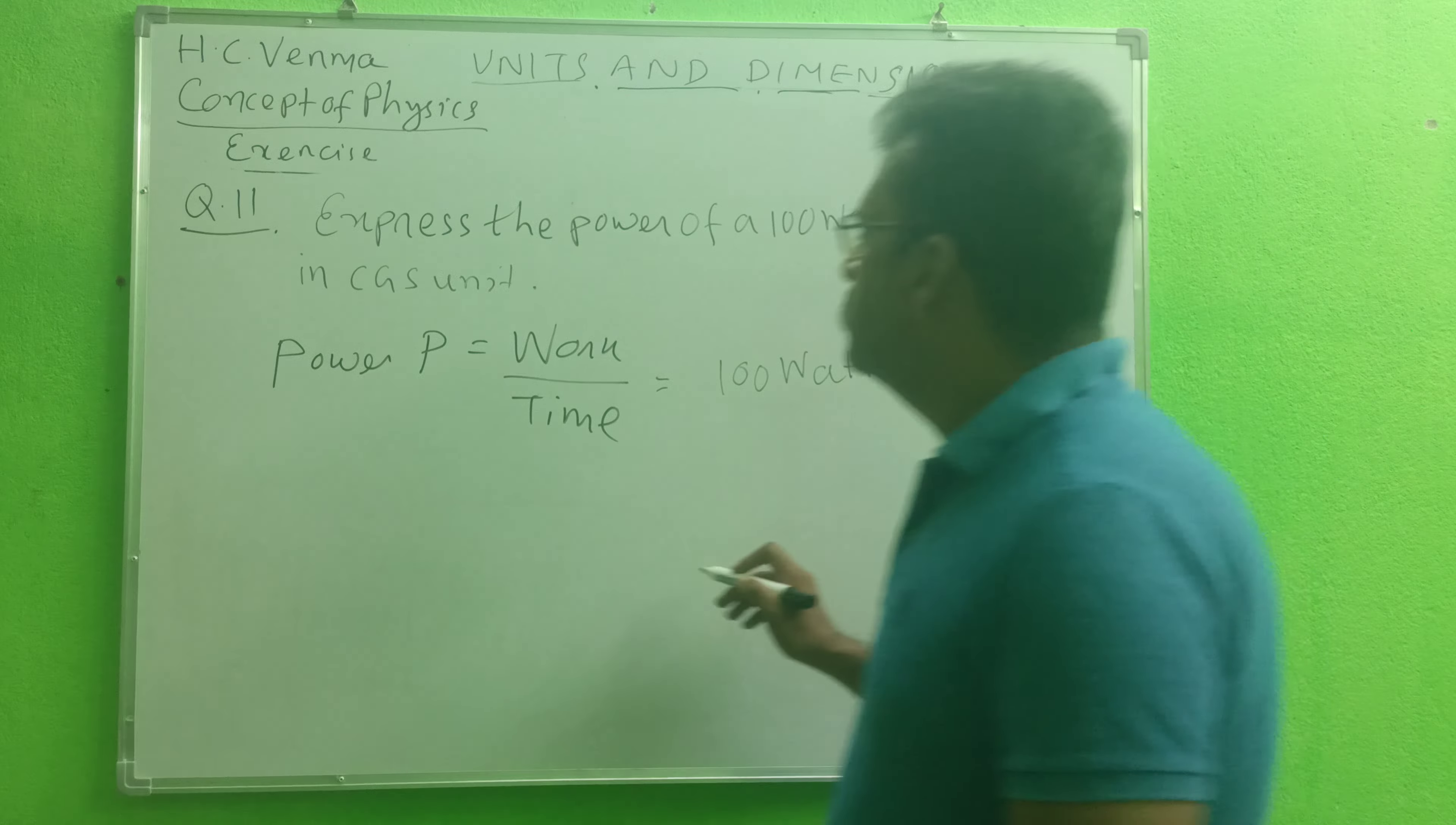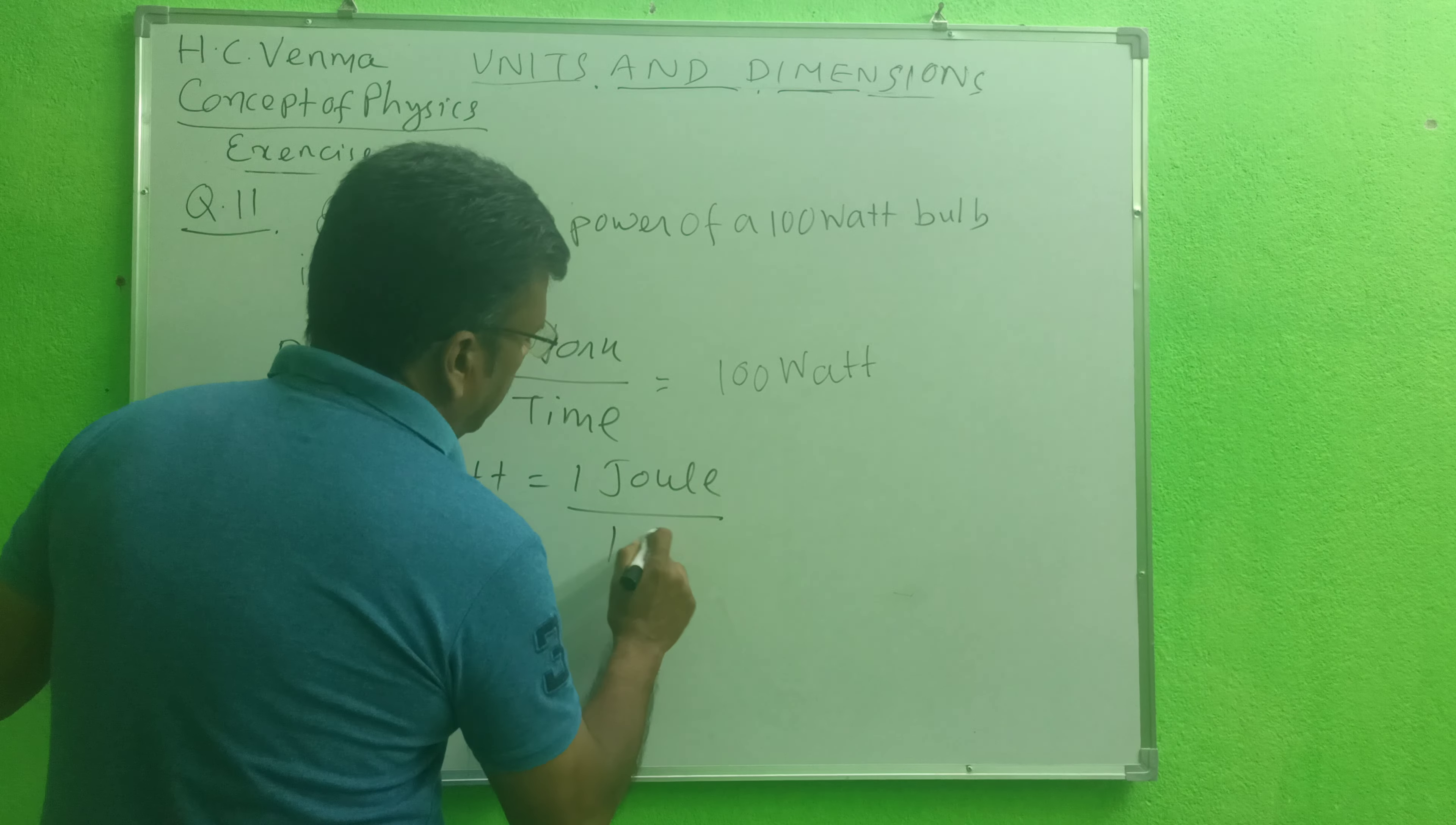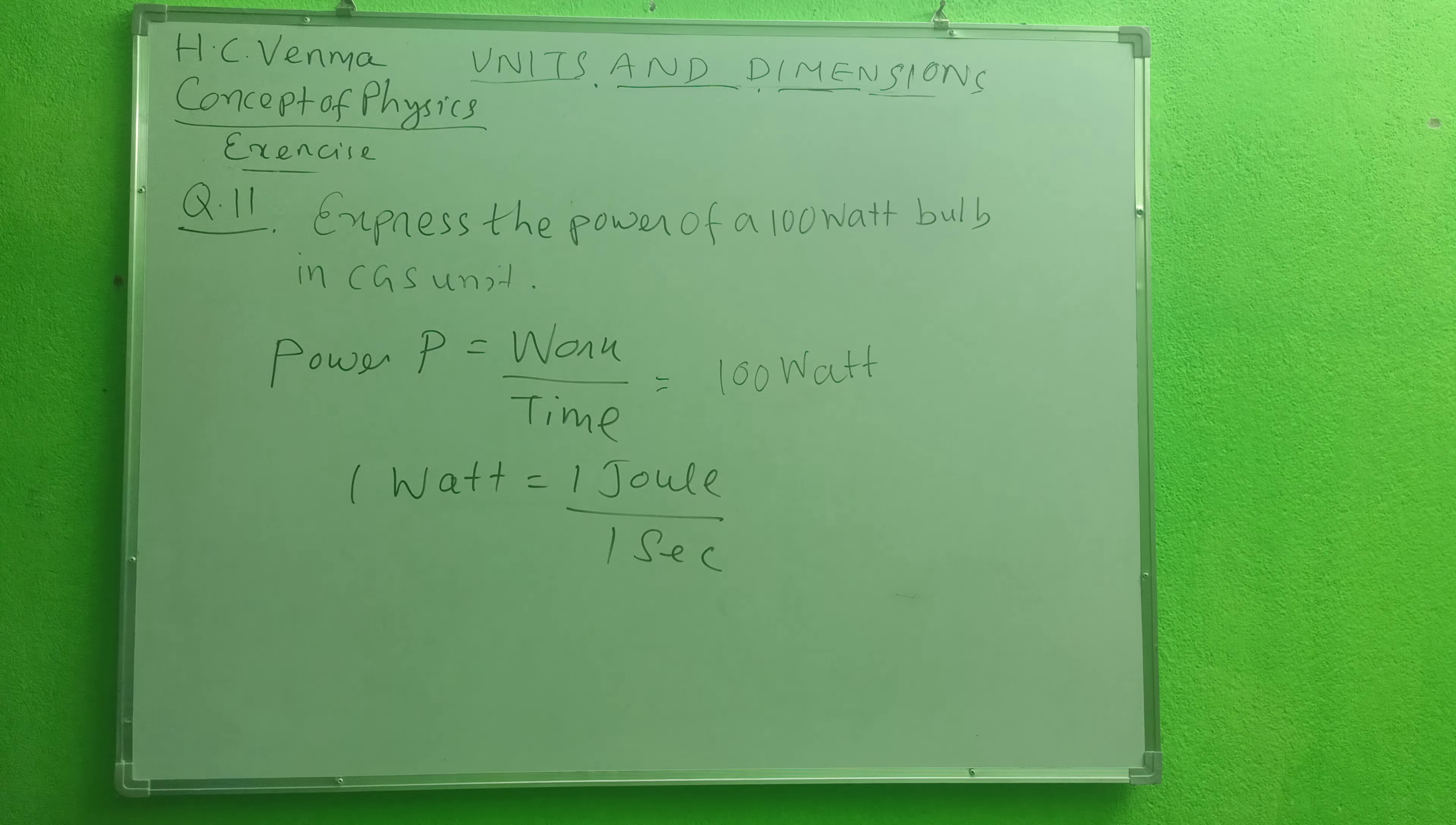What is 1 watt? You know, student, 1 watt is equal to 1 joule per 1 second, or the power of a body is said to be 1 watt if it performs a work of 1 joule in 1 second.